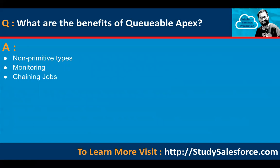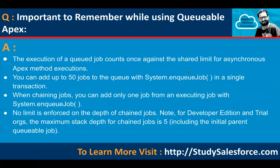Important things to remember while using Queueable Apex: the execution of a queued job counts once against the shared limit for asynchronous Apex method executions. You can add up to 50 jobs to the queue with System.enqueueJob() in a single transaction. When chaining jobs, you can add only one job from an executing job with System.enqueueJob(). No limit is enforced on the depth of chained jobs; however, in Developer Edition and trial orgs, the maximum stack depth for chained jobs is 5.